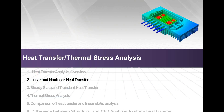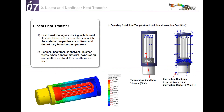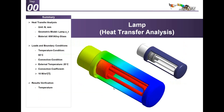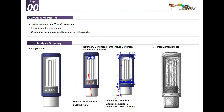Now let's talk about linear and nonlinear heat transfer. Linear heat transfer analysis deals with thermal flow conditions where material properties are uniform and do not vary with temperature. The loads used are conduction, convection, and heat flux — radiation cannot be considered in linear analysis. We will now do a simple tutorial in MidasNFX using a lamp model with temperature of 60 degrees assigned to the glass lamps and convection with 20 degrees ambient on other surfaces.